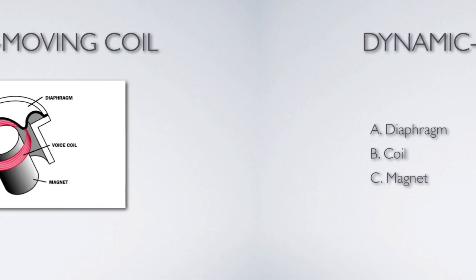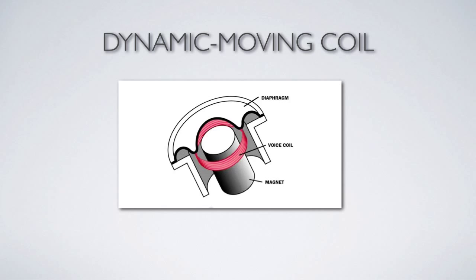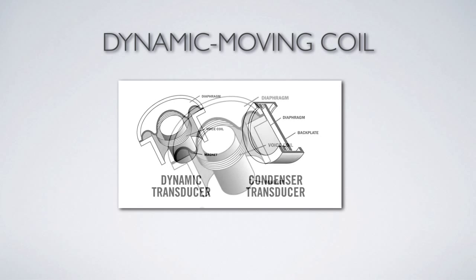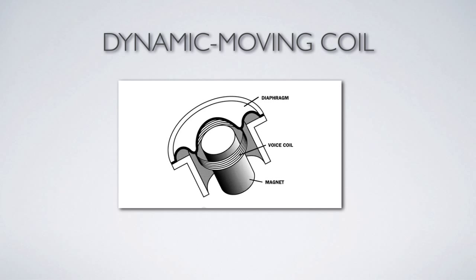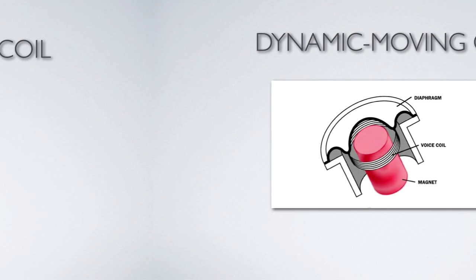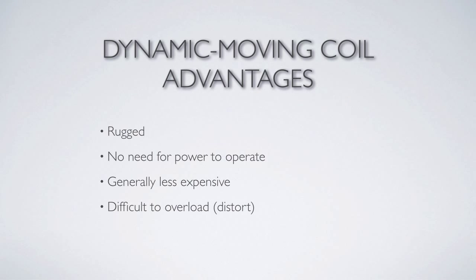Let's take a look at this animation. On the dynamic microphone you can see the diaphragm receiving the sound, then it moves a voice coil, and the magnet below causes the electrons to move.